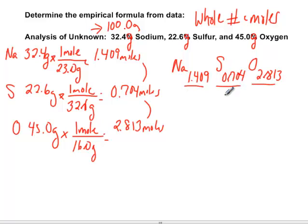The smallest is 0.704. This turns into a 1, this turns into a 4, and 0.704 cancels out and turns that into a 2.